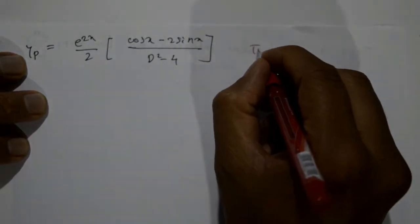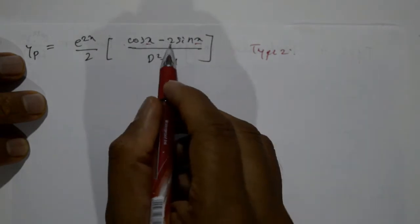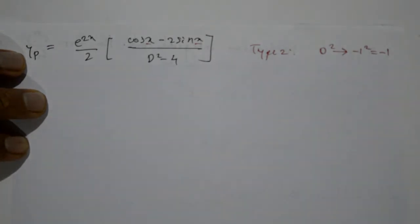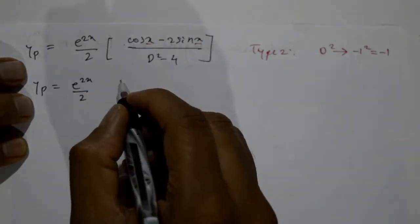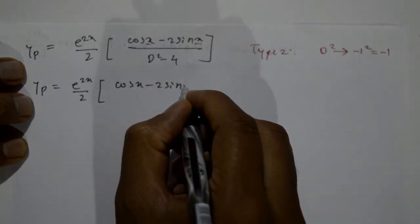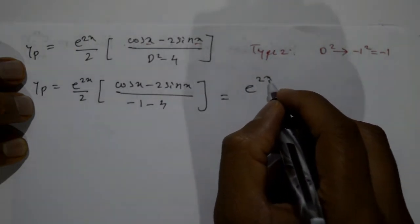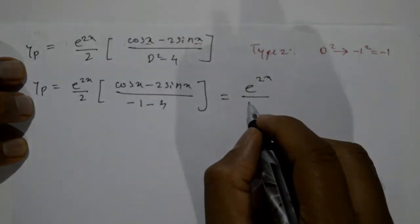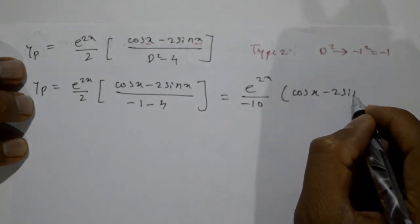This is Type 2 again with a=1. Replace D² = -1: denominator = -1 - 4 = -5. So yp = (e^(2x)/2)·(cos x - 2sin x) / (-5) = -e^(2x)/(10) · (cos x - 2sin x).